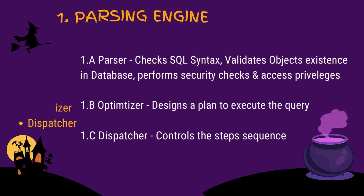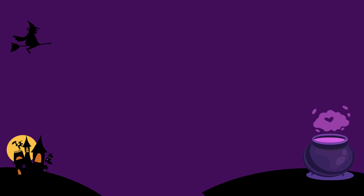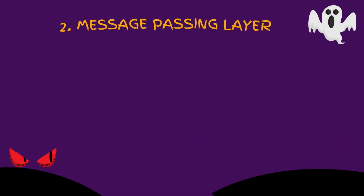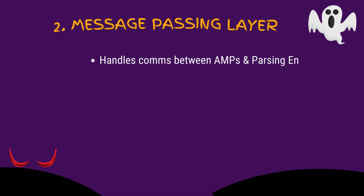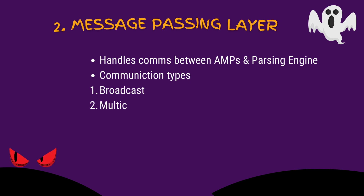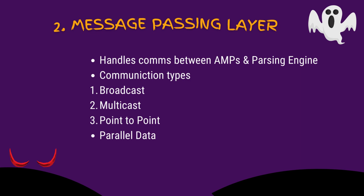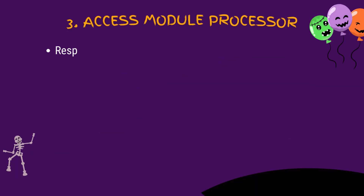Coming to the second point — Message Passing Layer: This handles the communications between the Parsing Engine and AMPs, also called Access Module Processors. Communications here can be of various types: broadcast, multicast, and point-to-point. The main software involved in this module are Parallel Database Extensions (PDE) and BYNETs.